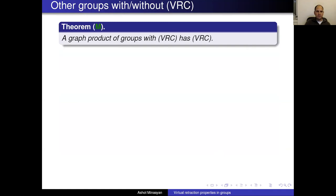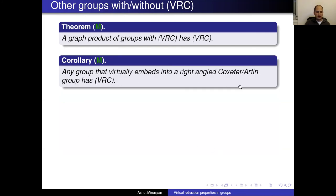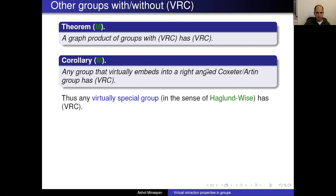More groups with VRC: a graph product of groups with VRC has VRC. A key corollary is that any group that virtually embeds into a right-angled Coxeter or Artin group has VRC. In the past 10 years, many groups have been proved to virtually embed into right-angled Artin groups — for instance, fundamental groups of closed hyperbolic manifolds by Agol's theorem — so all such groups have VRC.